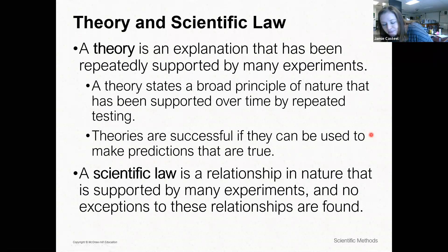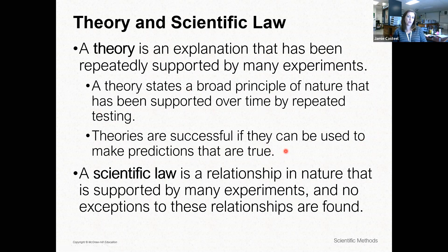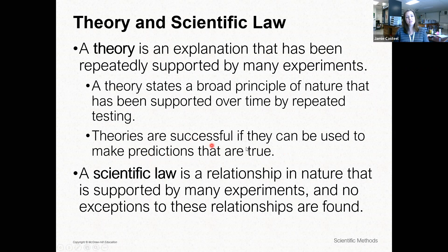A theory is an explanation that has been repeatedly supported by many experiments — you can't just do one experiment and call it done. It states a broad principle of nature that has been supported over time by repeated testing. Theories are successful if they can be used to make predictions. For example, the theory of evolution — how did humankind and all the species we see get here? That theory has been built up over many years and many studies, and it can be used to predict, say, genetic mutations and how species might change over hundreds of years.